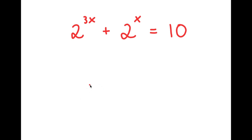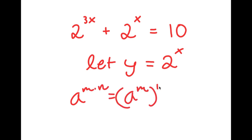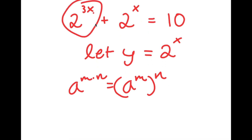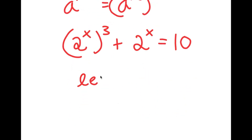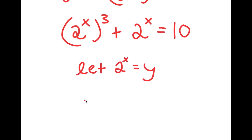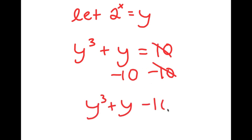In this problem, I have 2 to the power of 3x plus 2 to the power of x is equal to 10. I'll start by letting y equal 2 to the power of x. Using the rule a^(mn) equals a^m raised to the power of n, 2^(3x) equals (2^x)^3 equals y^3. So substituting, I get y^3 plus y is equal to 10. Subtracting 10 from both sides gives y^3 plus y minus 10 equals 0.